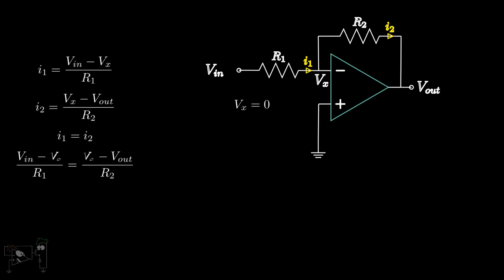So, our equation simply reduces to Vn upon R1 is equal to minus Vout upon R2. Rearranging the terms, we get Vout upon Vn as minus R2 upon R1.